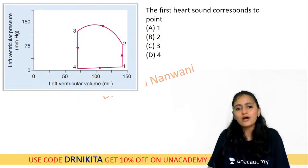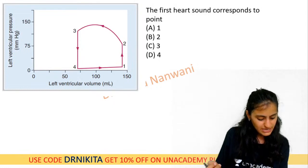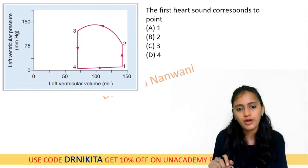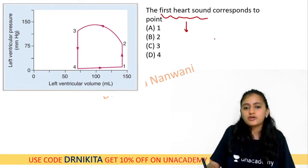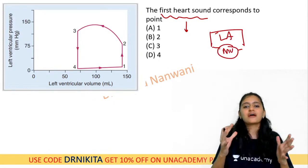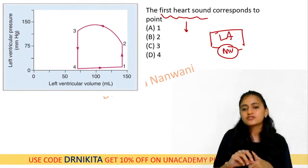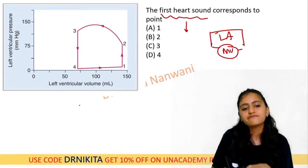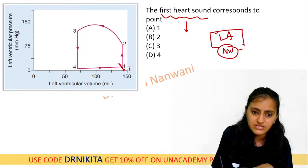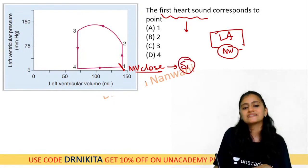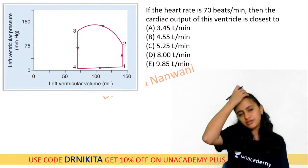Next question: the first heart sound (S1) corresponds to which point? S1 is produced by the closing of the mitral and tricuspid (AV) valves — just like the sound when you shut a door. The mitral valve closes at point 1, so point 1 corresponds to S1.